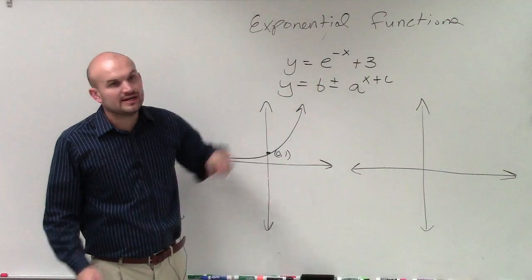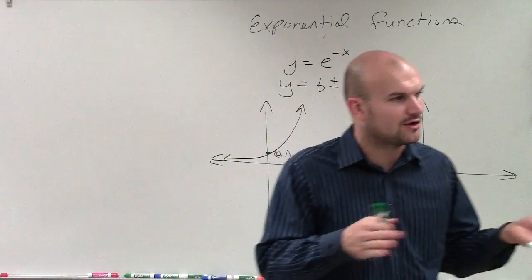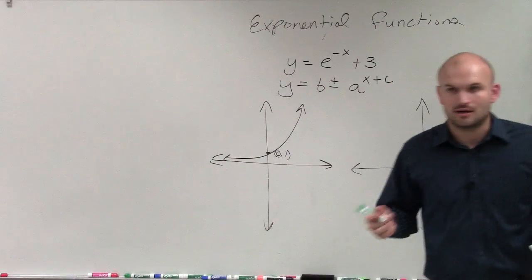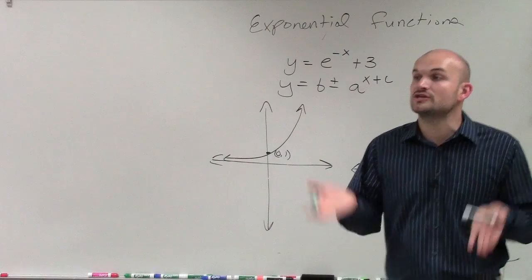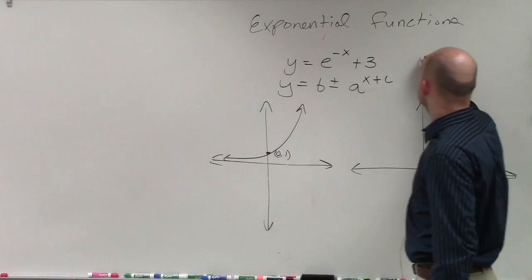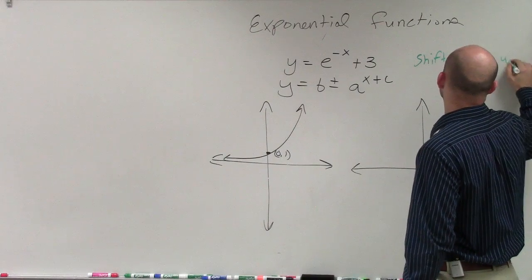So now let's go over here and see, well, what are my transformations? What is that 3 doing? Am I adding the 3 inside or outside of my function? I am adding it outside. So therefore, it's going to shift the graph up. So you can say shift 3 units up.